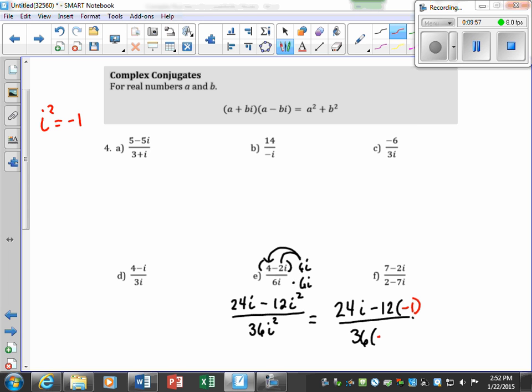And that will give us 24i plus 12 over negative 36. Now we're going to divide 12 out of each of these, so you would get 24 divided by 12 is 2, 12 divided by 12 is 1, 36 divided by 12 is 3, and there's a negative.